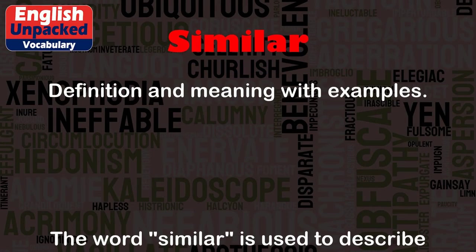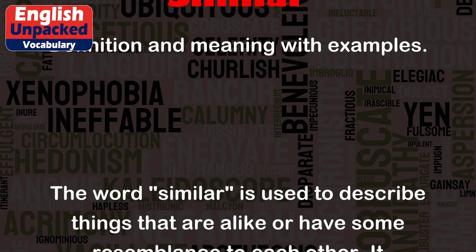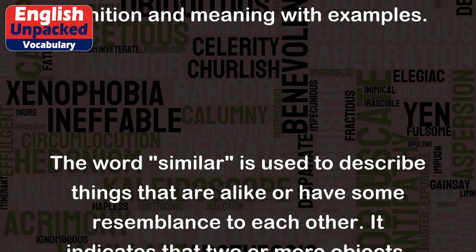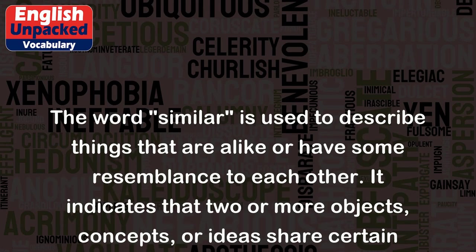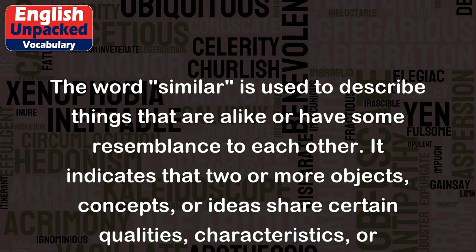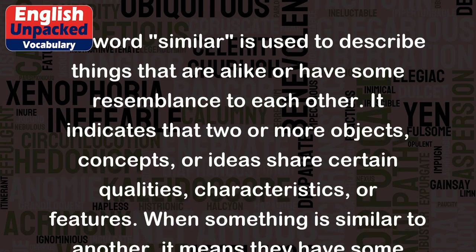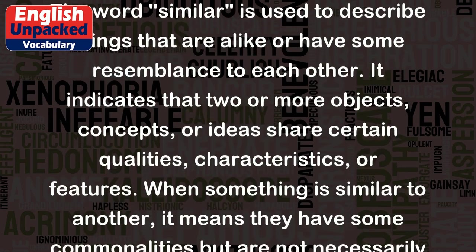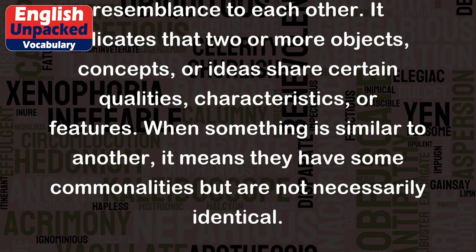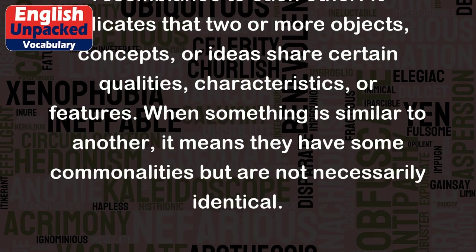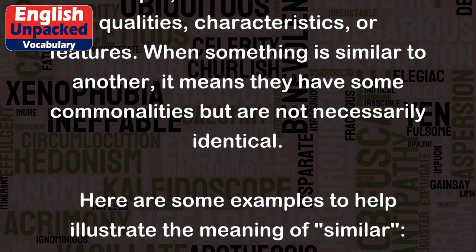The word 'similar' is used to describe things that are alike or have some resemblance to each other. It indicates that two or more objects, concepts, or ideas share certain qualities, characteristics, or features. When something is similar to another, it means they have some commonalities but are not necessarily identical.